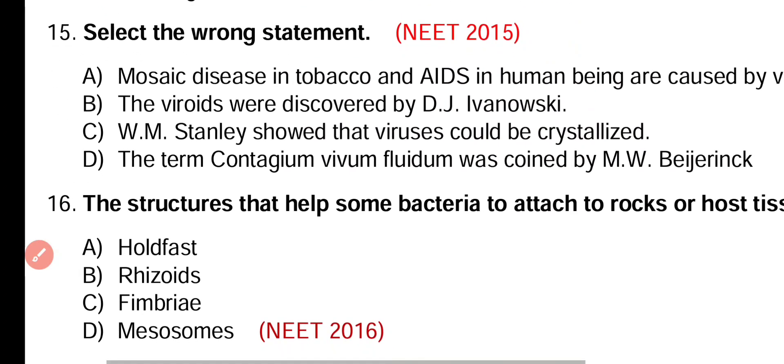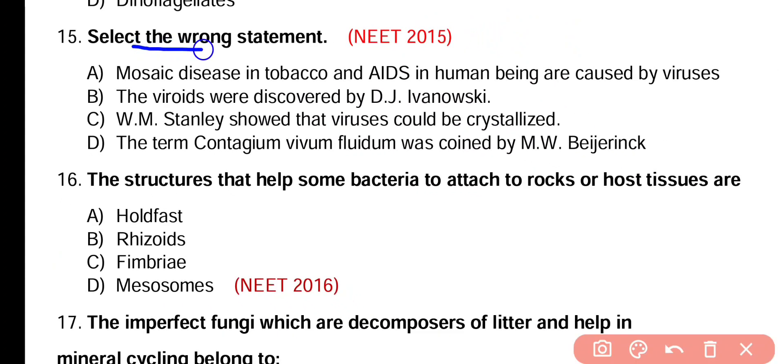Question number 15. Select the wrong statement. Option A: Mosaic disease in tobacco and AIDS in humans are caused by viruses. Option B: The viroids were discovered by D.J. Ivanovski. Option C: W.M. Stanley showed that viruses could be crystallized. Option D: The term contagium vivum fluidum was coined by M.W. Beijerinck. The wrong statement is option B — viroids were discovered by Theodor O. Diener, not Ivanovski.